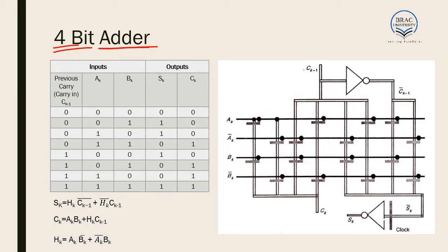Here is the truth table of a single-bit full adder. 0, 0, 0 gives sum 0, carry 0. 0, 0, 1 gives sum 1, carry 0. We know the expression of the half adder is A̅B + AB̅. Using that, we compute the result of the half adder into carry-in bar plus the result of the half adder bar into carry-in, which gives us the sum. And our carry is A·K·B·K plus H·K into C·K-1.